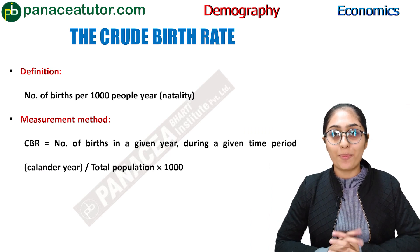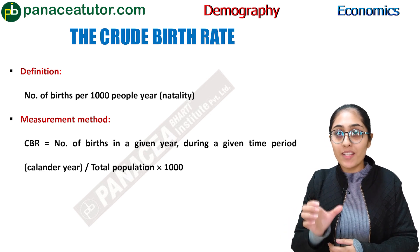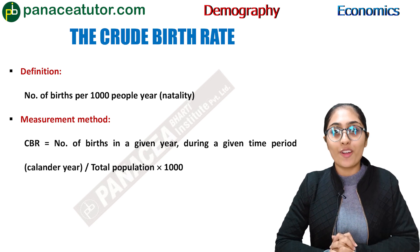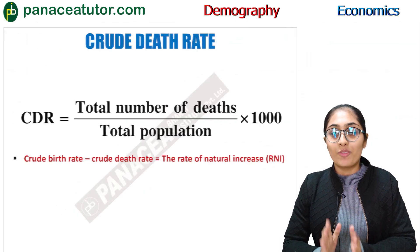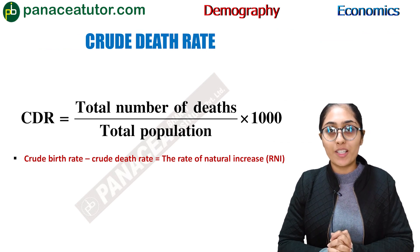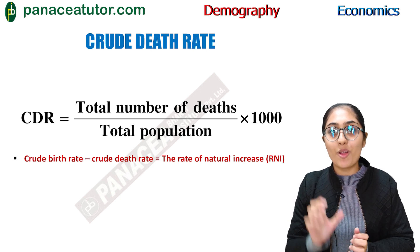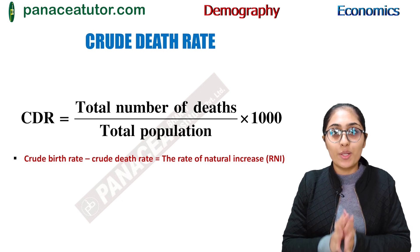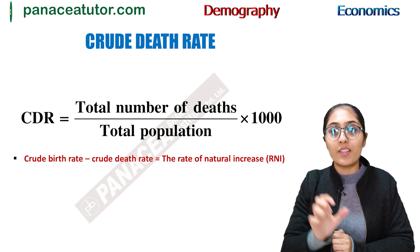Crude birth rate means the number of live births per thousand population. Its formula is: number of live births divided by total population, multiplied by 1000. Crude death rate is similar — it means the number of deaths per thousand population. Its formula is: number of deaths divided by total population, multiplied by 1000. Natural increase in population is simply the difference between crude birth rate and crude death rate.